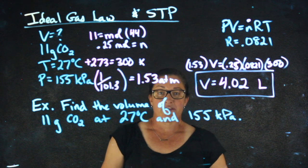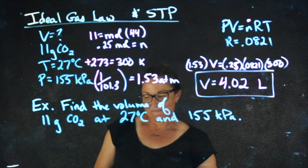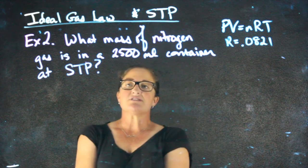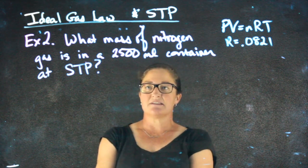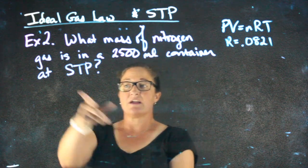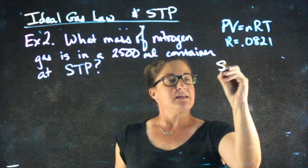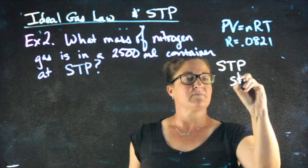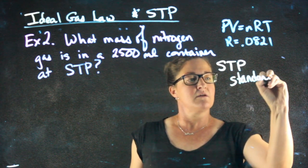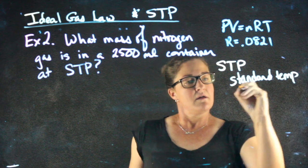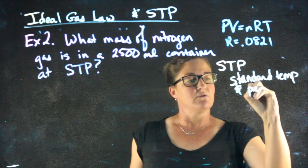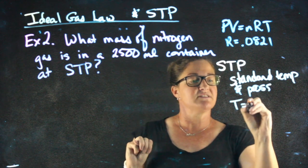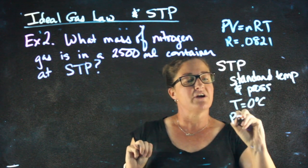We're going to take a look at another problem. Now we're introducing the idea of something known as STP. This question says, what mass of nitrogen gas is in a 2,500 milliliter container at STP? STP means standard temperature and pressure. I am telling you that in just three little letters that the temperature is 0 degrees Celsius and the pressure is 1 atm.